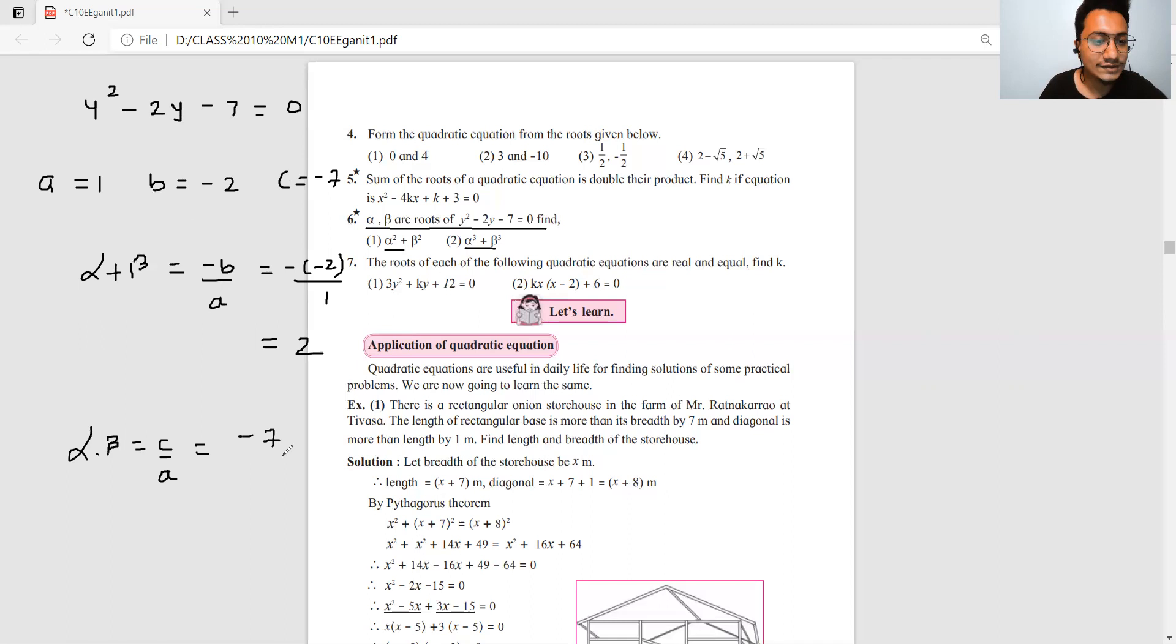What is the formula for alpha square plus beta square? It is alpha plus beta the whole square minus 2 alpha into beta. And alpha cube plus beta cube equals alpha plus beta the whole cube minus 3 alpha beta times alpha plus beta.